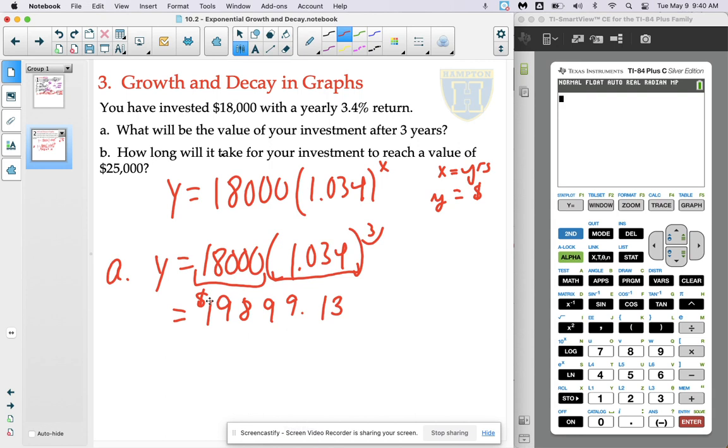For the second question, we're going to answer it in a little bit of a different way that's dependent upon the information that we're provided with. So in the second question, instead of being given a number of years, we're given a dollar amount that we want to use as our target.